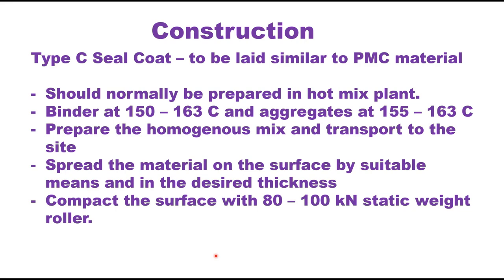For Type C seal coat, the procedure is similar to laying premix carpet material and should normally be prepared in a hot mix plant. Binder is heated at 150 to 163°C, and aggregates are heated separately at 155 to 163°C. A homogeneous mix of binder and aggregate is prepared and transported to the site. The material is then spread on the surface by acceptable means to the desired thickness and compacted with an 80 to 100 kN static weight roller.